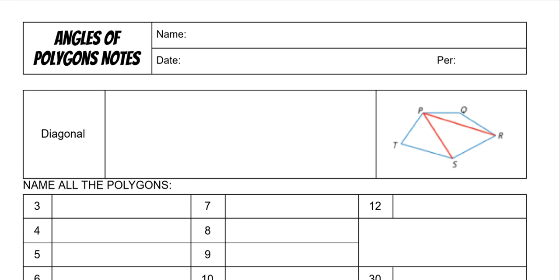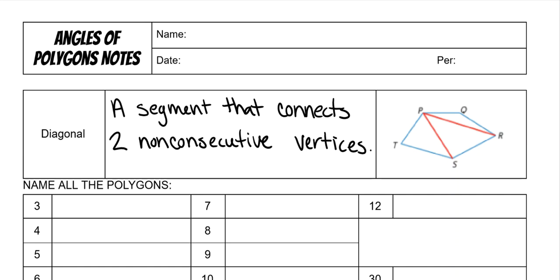We're going to go over angles of polygons, all the different angles that have to do with the polygon. In order to do that, we have to discuss what a diagonal is. A diagonal is a segment that connects two non-consecutive vertices. And it's how we figure out all the angles inside of any polygon, no matter how many sides it is.